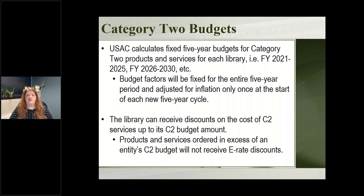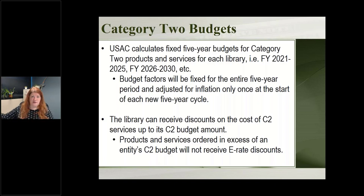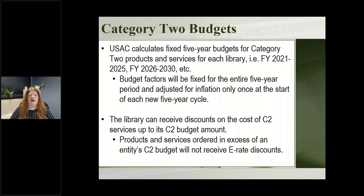If a project costs more than your budget, that's okay. You're only going to get an E-Rate discount on how much E-Rate has calculated you're eligible for. For example, if you have a project costing $50,000 but your E-Rate budget is only $25,000, you can still do that big project. E-Rate is just going to give you a discount up to half of that project because your budget is $25,000. You're not cut off — E-Rate just looks at part of it.